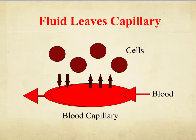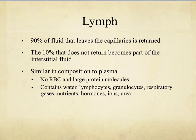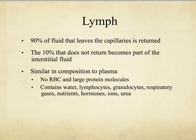90% of the fluid that leaves the capillaries is returned, and the 10% that doesn't return becomes interstitial fluid — the fluid between the cells and the blood capillaries. It has a similar composition to plasma, contains no red blood cells, and has large protein molecules, as well as water, lymphocytes, granulocytes, respiratory gases, nutrients, hormones, ions, and urea.